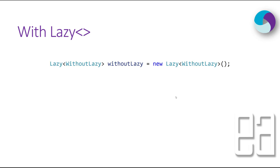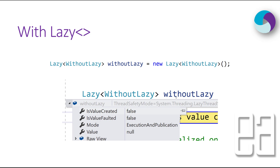Instead of that we can defer this kind of loading using what is called a lazy operation. Using the generic Lazy<T> type on the existing WithoutLazy class, once you call this lazy wrapper it is not going to instantiate any of its objects unless until you actually call the Value property. For the first time, you can see it has a property called IsValueCreated which is false, and the value is null. But once you call the Value property it will invoke the object and initialize it.